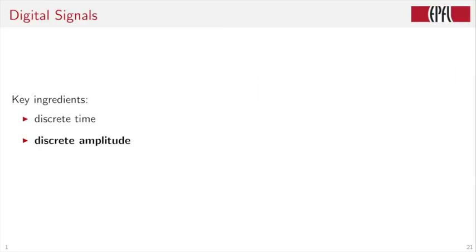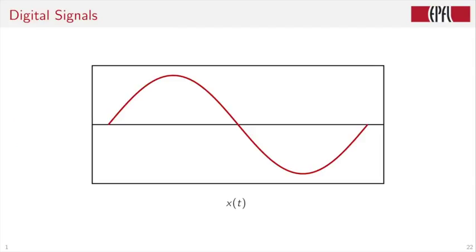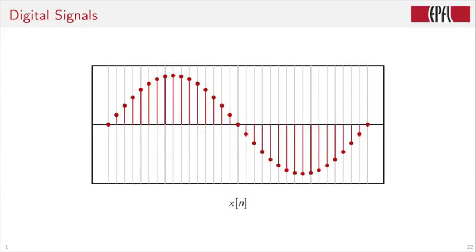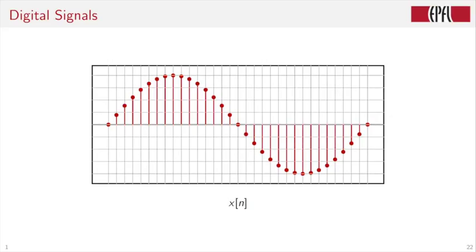As we said, the key ingredients are discrete time and discrete amplitude for digital signals. So let us look at x of t. Here it's a sinusoid and investigate discrete time first. We see this with xn and discrete amplitude. We see this with these levels of the amplitudes, which are also discretized. And so this signal looks very different from the original continuous time signal x of t. It has discrete values on the time axis, discrete values on the vertical amplitude axis.